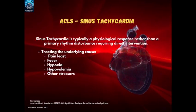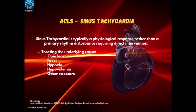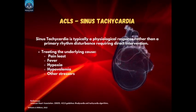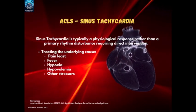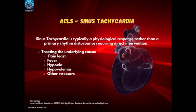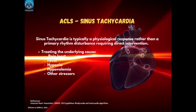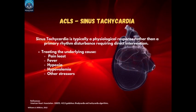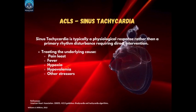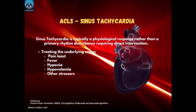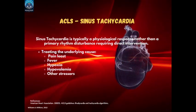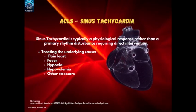In the 2023 American Heart Association guidelines, sinus tachycardia is typically a physiological response rather than a primary rhythm disturbance requiring direct intervention. The primary focus is treating the underlying cause — such as pain, fever, hypoxia, hypovolemia, or other stressors — rather than managing the sinus tachycardia itself. Sinus tachycardia typically does not require rhythm-specific intervention unless it results in hemodynamic instability. The ACLS algorithm for tachycardia with a pulse focuses on the patient's symptoms and hemodynamic stability. If symptomatic — hypotension, altered mental status, signs of shock — treatment is initiated based on ACLS protocols. Medications such as beta blockers or calcium channel blockers may be considered if tachycardia persists despite resolution of the primary cause.